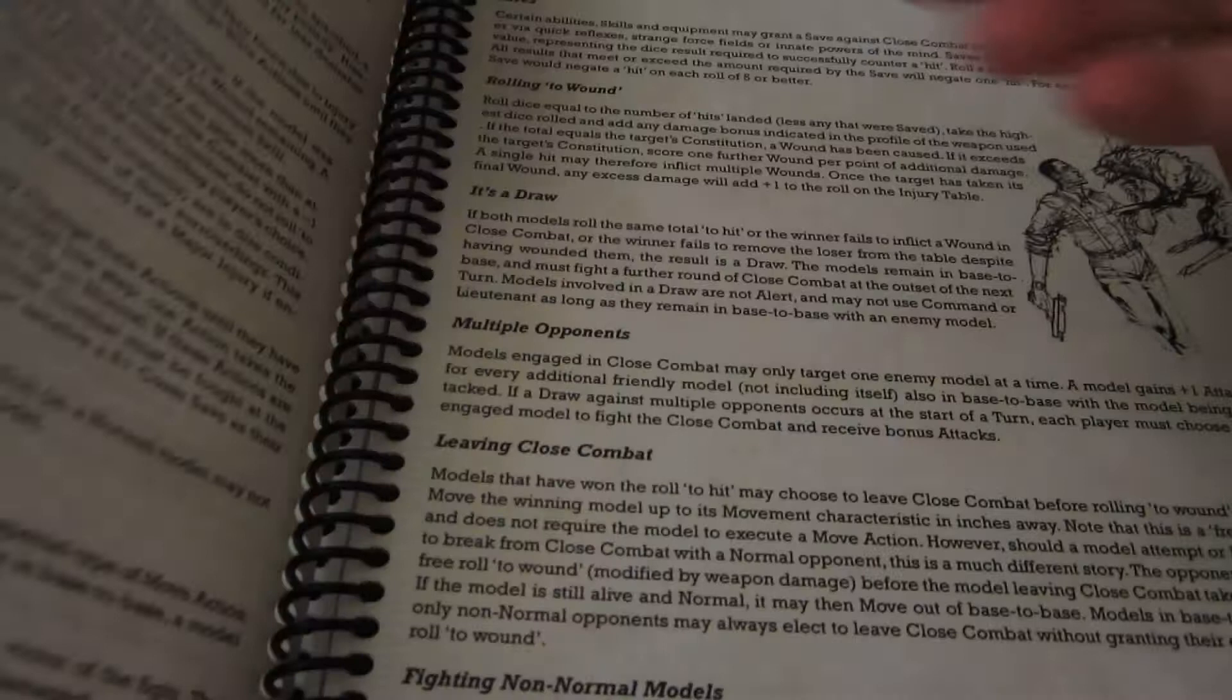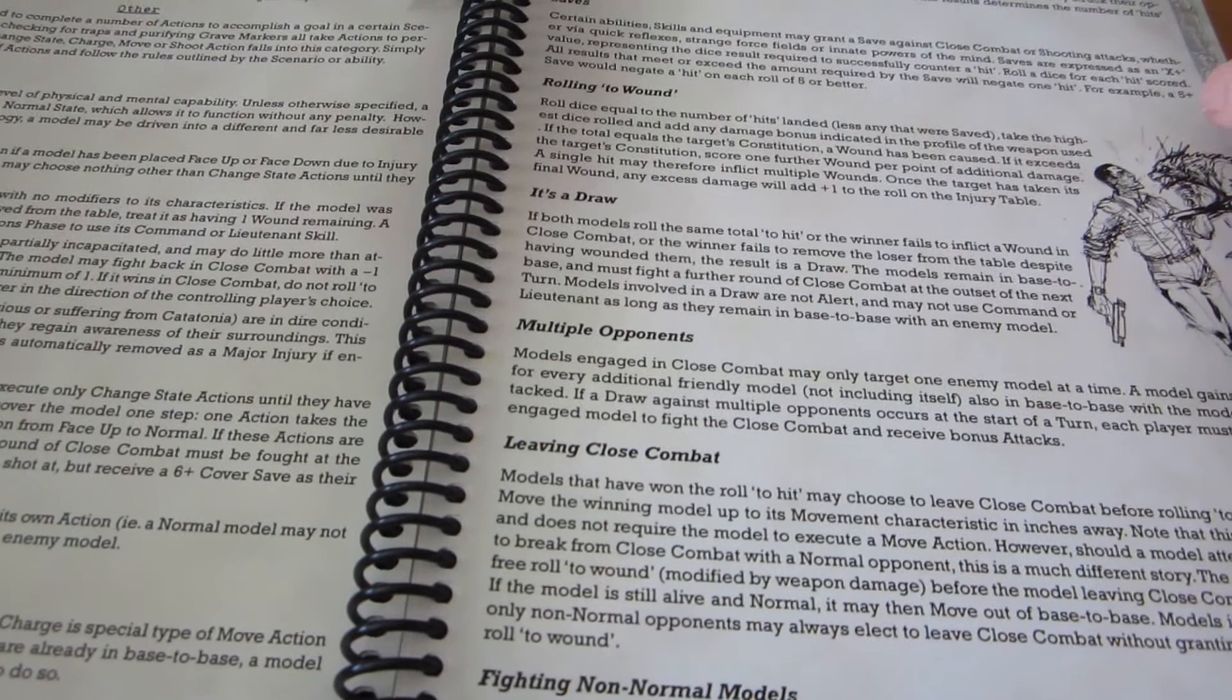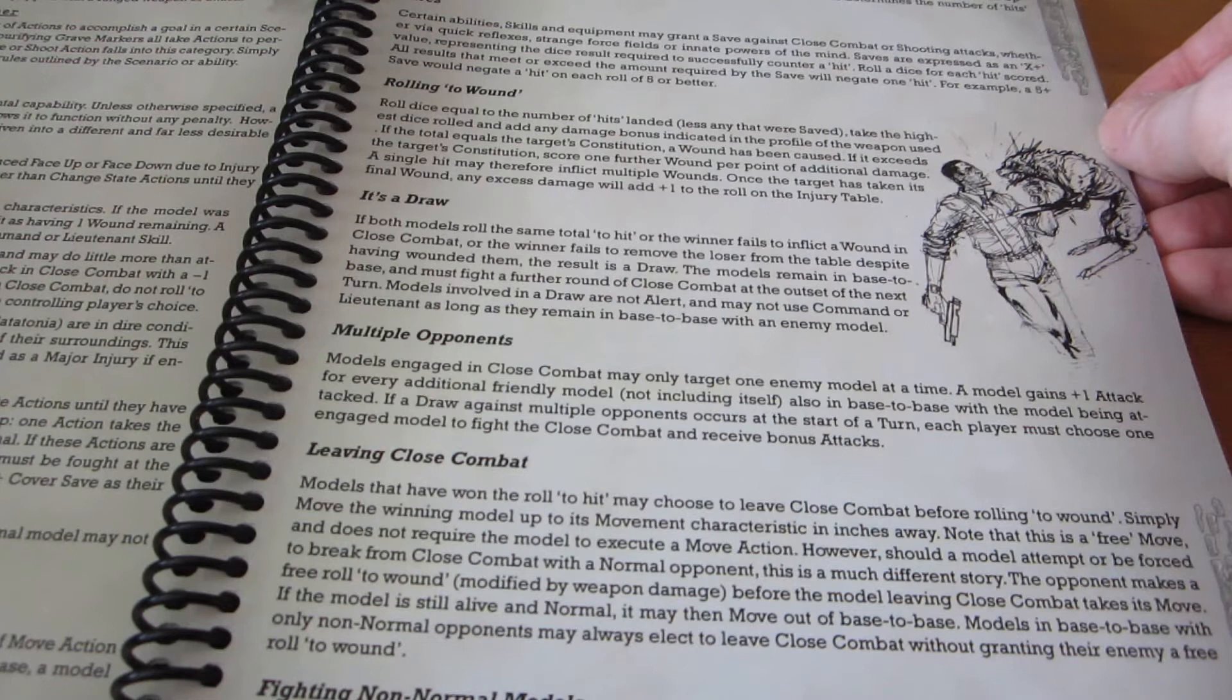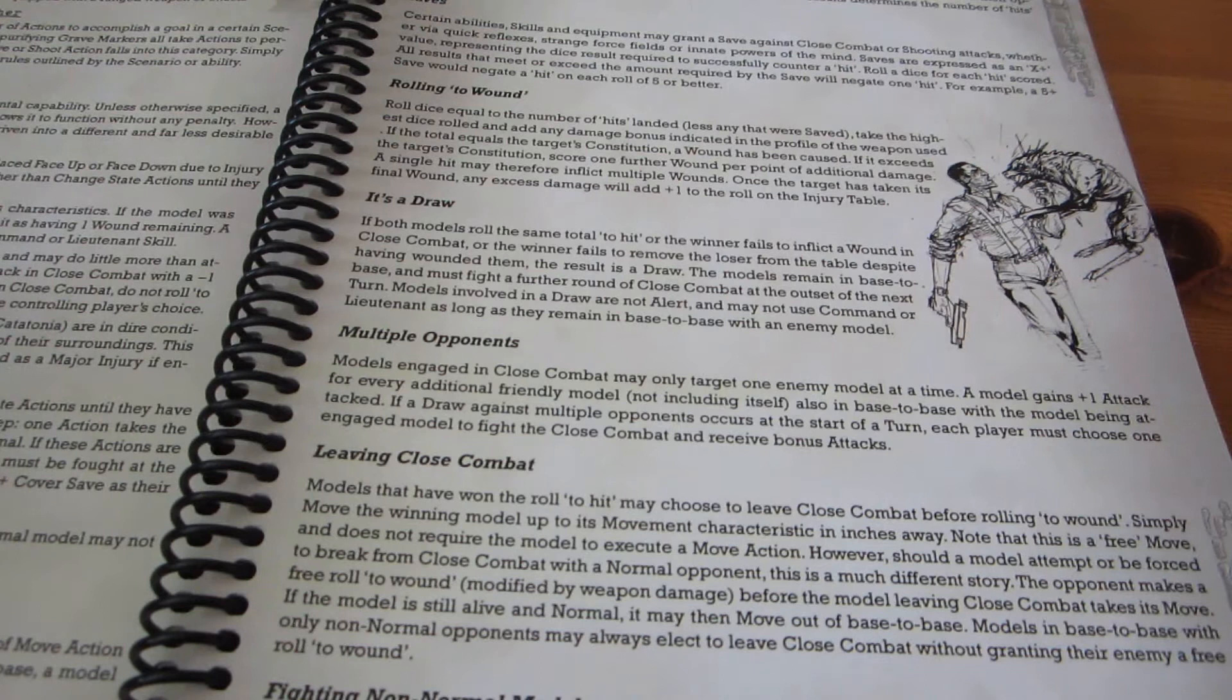When it comes to what you actually do, most of it is attacking of course. And attacks are handled by rolling a bunch of dice. Six-sided dice, always. And sometimes you're rolling a fistful of dice. But the thing is, you only count the highest one. You only count your best roll. So the numbers never get beyond six plus whatever bonus you might have. And there's some optional rules for critical rolls and fumbles and so forth. But the basic idea is, your best roll counts.